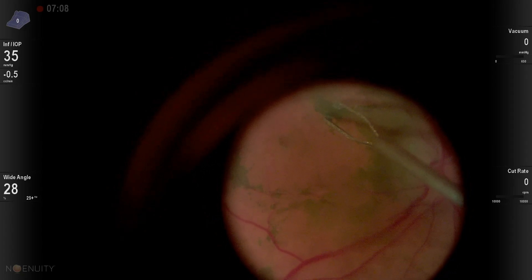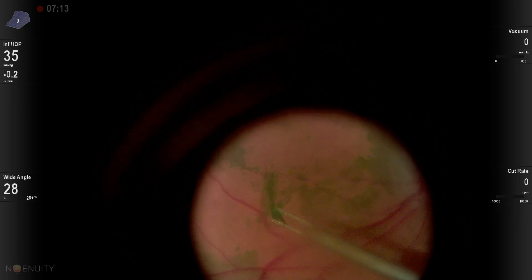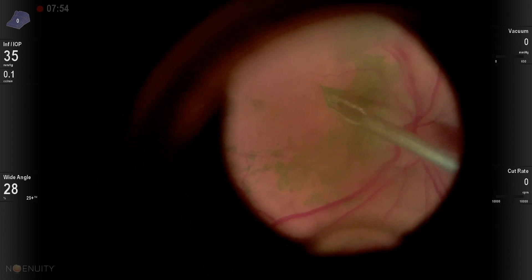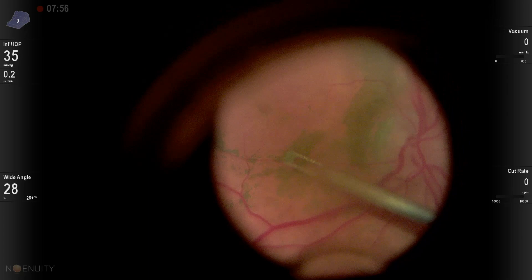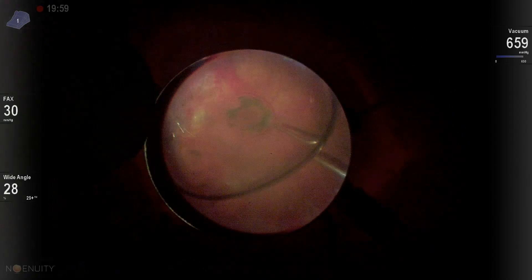I get my ingrasping forceps and I'm able to safely grab this ILM and peel it over into the epiretinal membrane, peeling the ILM out around and through the area to make sure we don't have any recurrence.